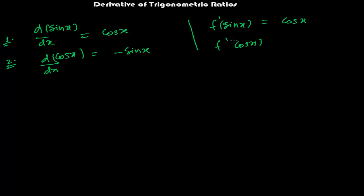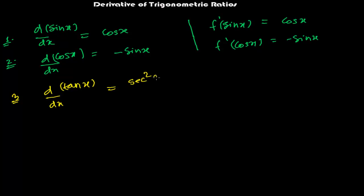Next, the third one: the derivative of tan x. You might expect it to be cot x, but it is not — it is sec²x. So the derivative of tan x is sec²x, or written in function notation, f'(tan x) = sec²x.